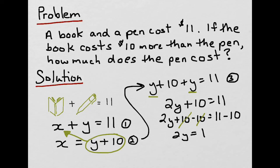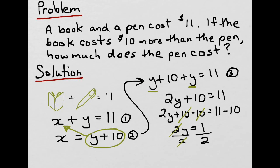And to get y by itself, because this is 2 times y, I need to divide by 2 to get rid of the 2 on the left side. And so whatever I do to one side, I've got to do to the other. And that means the 2s cancel out. And so what do I end up with? I get y equals 1 half, or for our purposes, we call it 0.5, or 50 cents.